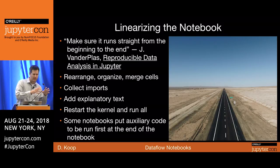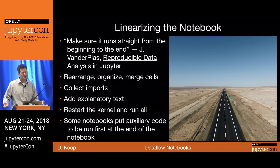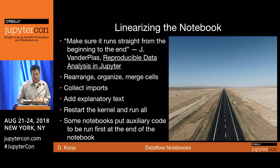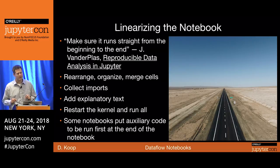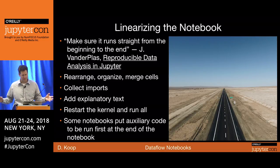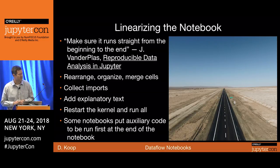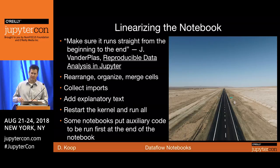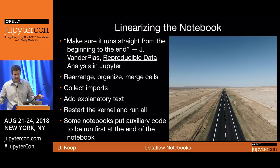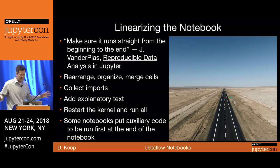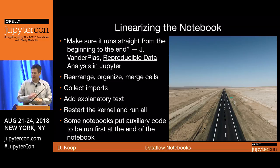Taking a messy notebook and turning it into something more explanatory and polished is sometimes referred to as linearizing the notebook. Jake VanderPlas talks about making sure your notebook runs straight from beginning to end. This involves polishing your notebook: rearranging, organizing, merging cells, collecting imports scattered across multiple cells and putting them at the top, adding explanatory markdown text. The last step is restart the kernel and run all — ensuring top-down execution.